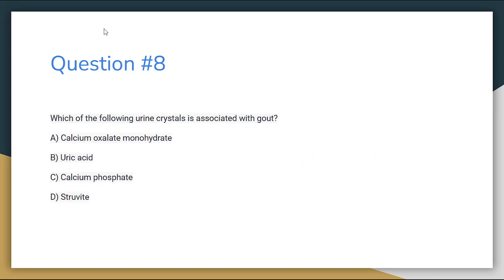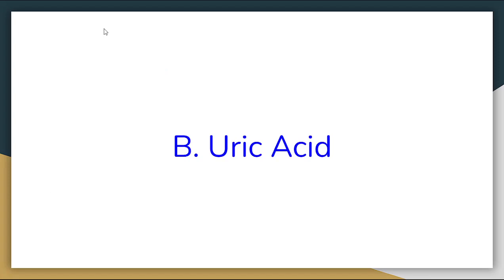Number 8. Which of the following urine crystals is associated with gout? Letter A: Calcium oxalate monohydrate. Letter B: Uric acid. Letter C: Calcium phosphate. Or letter D: Struvite. The correct answer for number 8 is letter B, Uric acid.